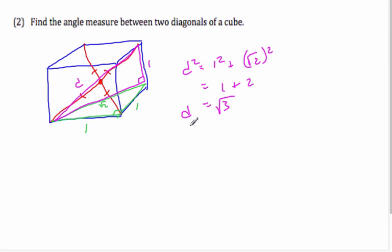So half of it then, half diagonal, is equal to √3 over 2.